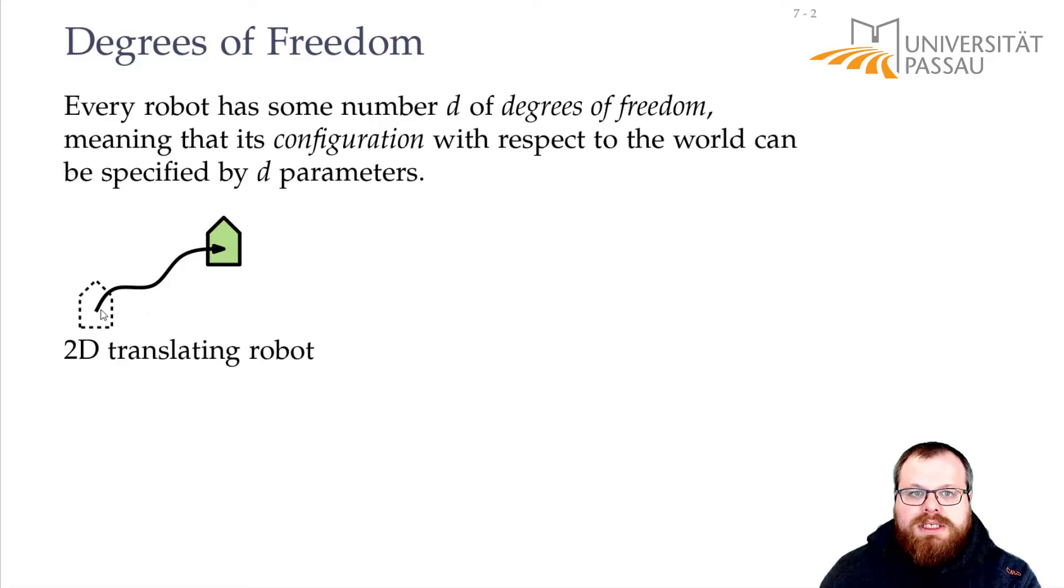If it can also rotate, then there are three degrees of freedom, because now, in addition to the two-dimensional translation, we also have the one-dimensional rotation. So we can describe the movement by three parameters: How much did we move horizontally? How much did we move vertically? And by how many degrees did we rotate?